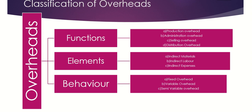So what is the classification of overheads? Overheads are basically classified according to three categories: functions, elements, and behavior. First, we look into overheads classified based on functions.